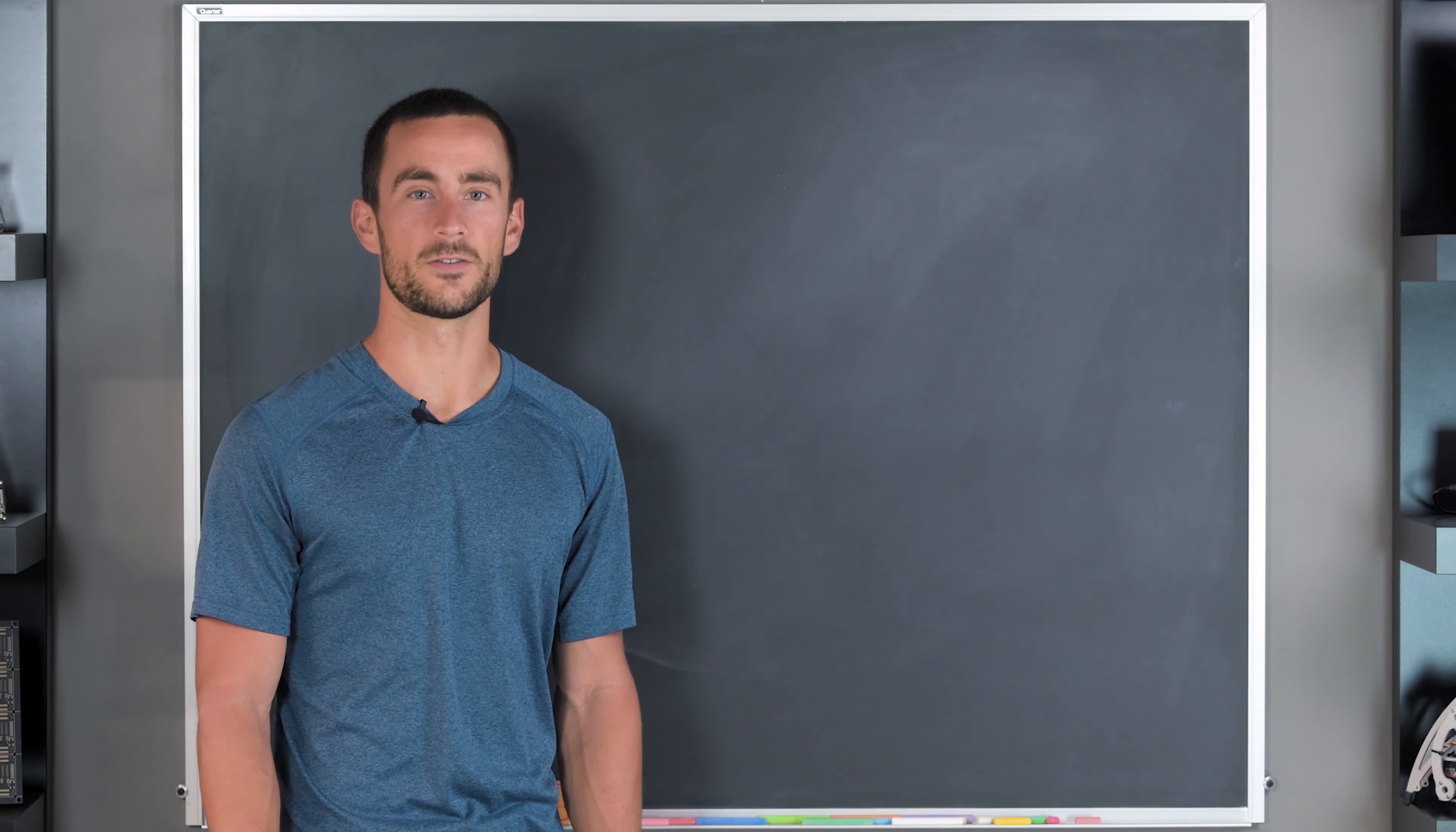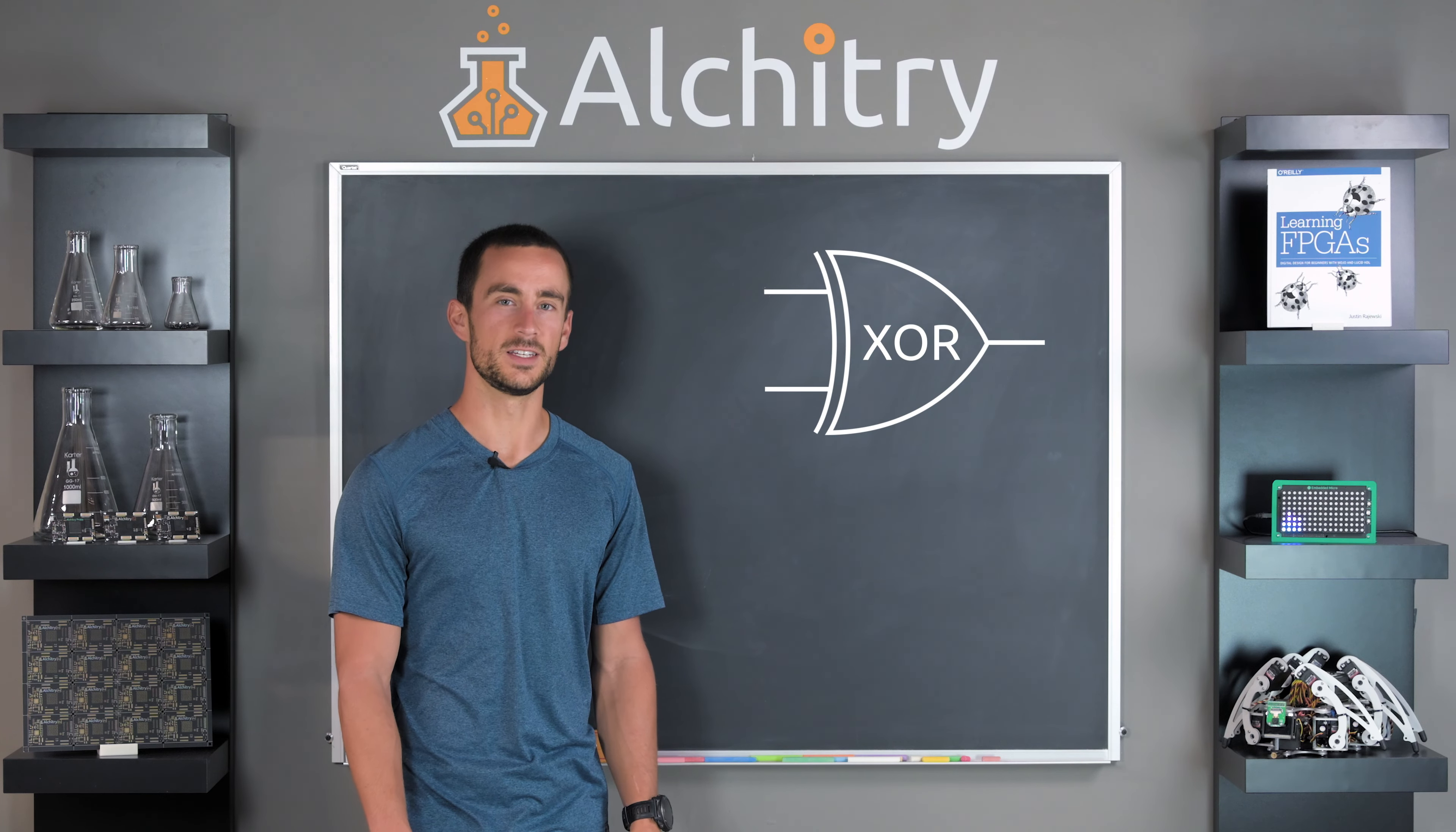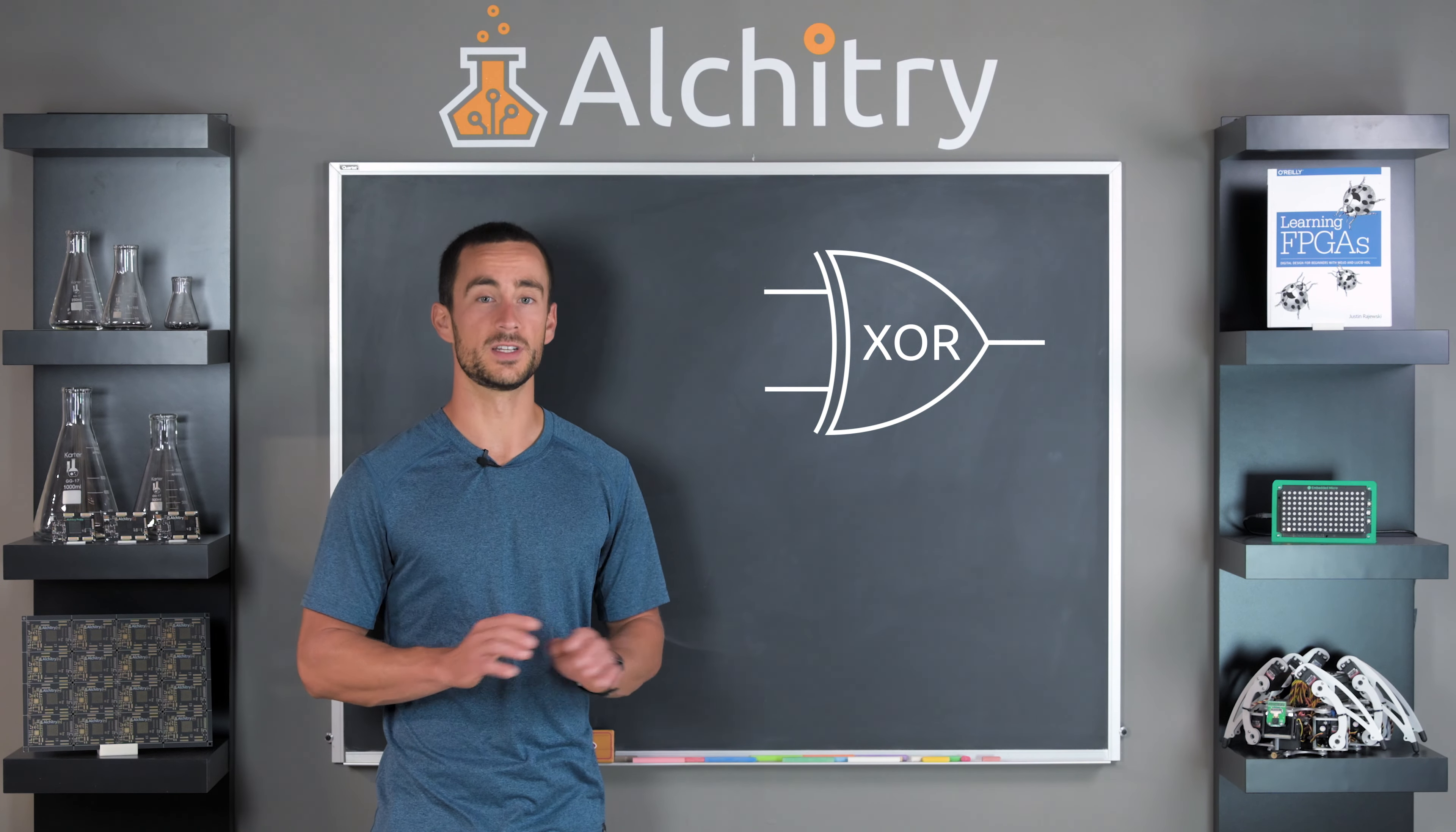There are a couple more logic gates to cover. The next one is the OR gate, and like the AND gate, it has two inputs and one output. However, its output is 1 when the first input is 1 OR the second input is 1. A variation of this is the exclusive OR, written as XOR. This gate only outputs 1 when either the first input is 1 OR the second input is 1, but not when both are 1. Another way to think about this gate is that it will only output 1 when the inputs are different.